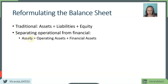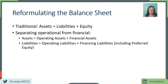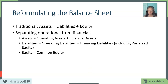Once we rearrange assets, we also have to rearrange liabilities into operating liabilities versus financing liabilities. A very important point here is that preferred stock is considered a financing liability. The reason for that is we are looking at this from a common stockholder perspective. So even though legally preferred stock is considered equity, when we are doing the analysis, we include preferred stock as part of financing liability. Therefore, when we talk about equity in this sense, we are talking about only common equity.